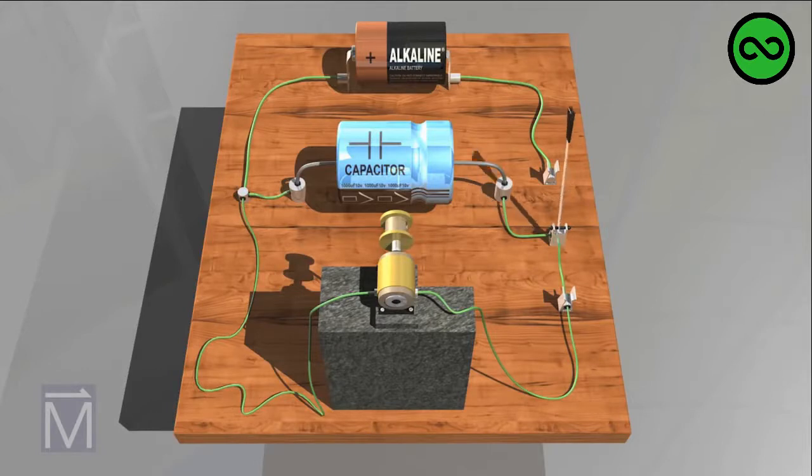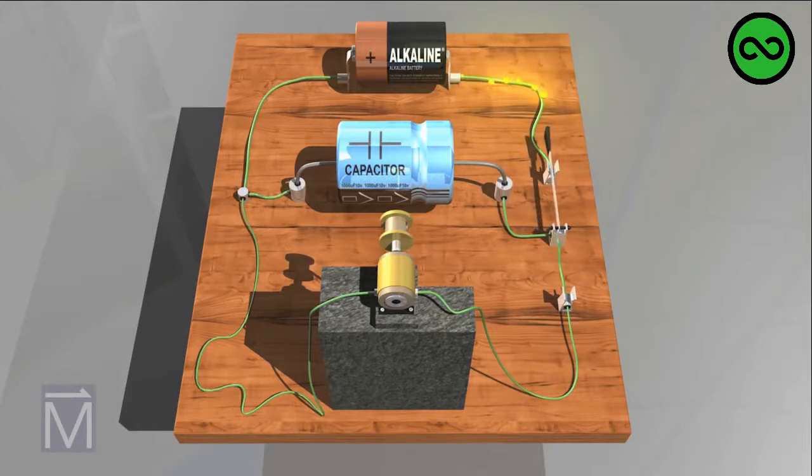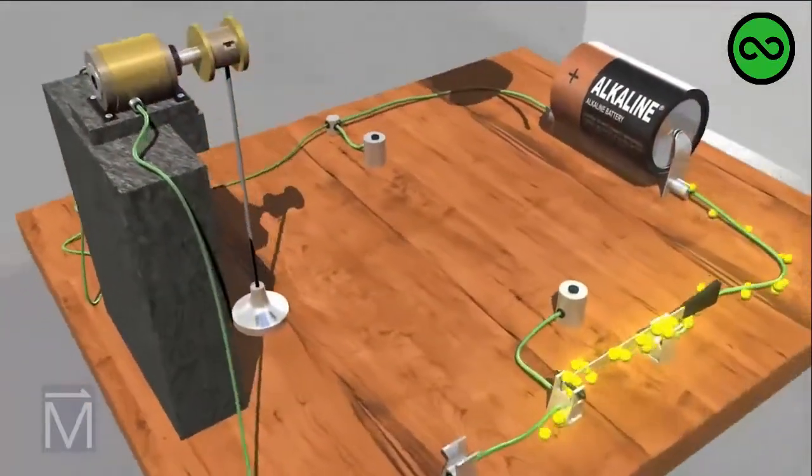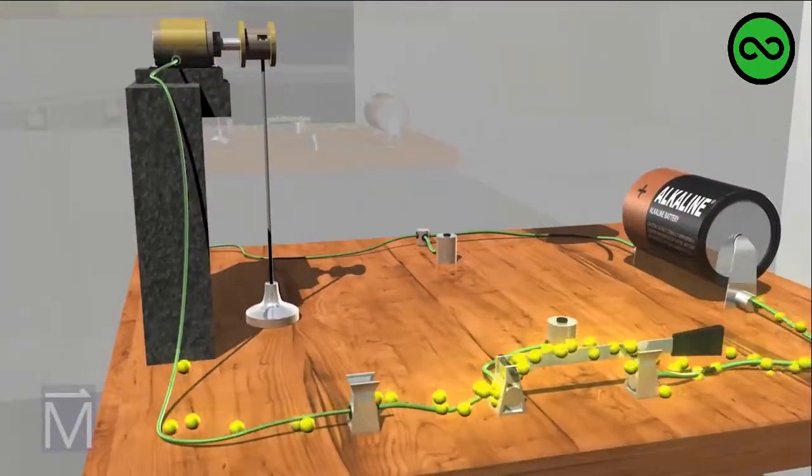When we close the switch, electricity immediately runs throughout the circuit. Although the convention is to think of electrical current as moving from positive to negative, electrons actually move from negative to positive, as we represent here with yellow particles.